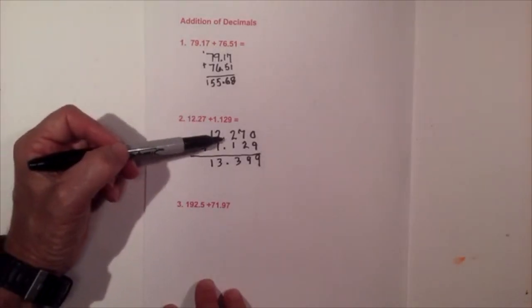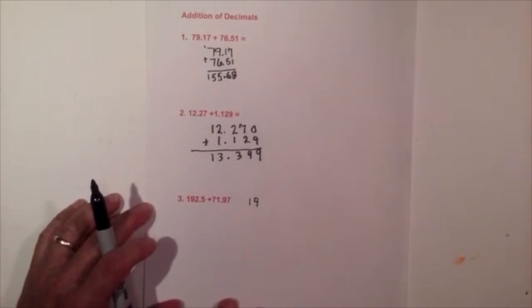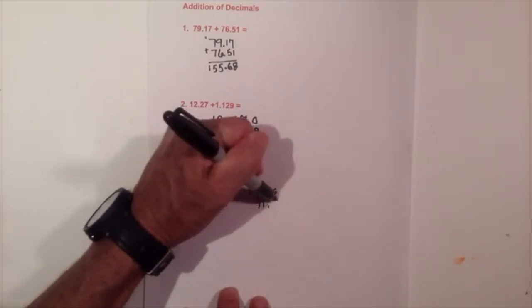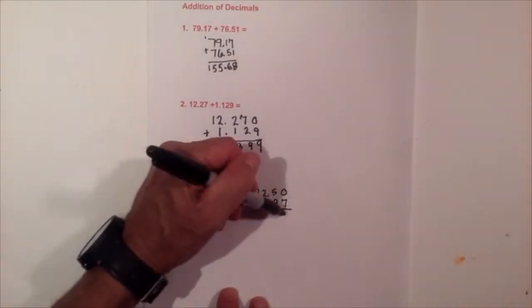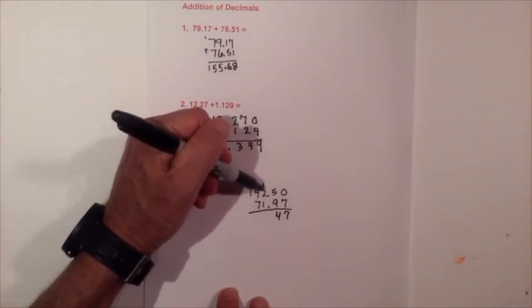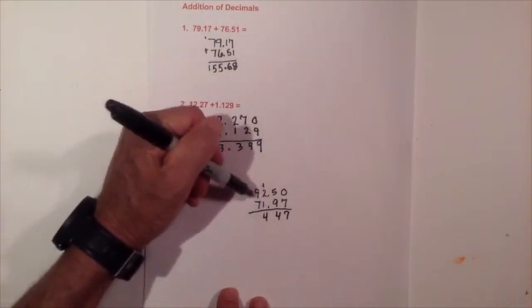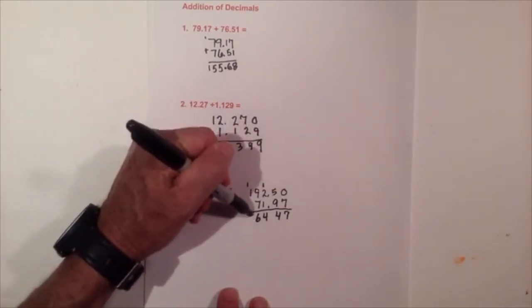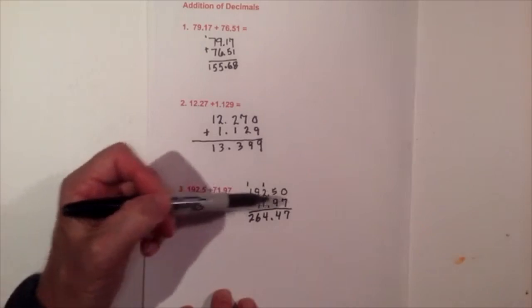The key was notice that I lined up the decimal and then I added a 0 there. Same thing again, we have 192.5 plus 71.97. If you would like, you can add a 0 on top. Notice that I have lined the decimals up and then we just add them normally. Bring over the 1, then this becomes 2, 3 and that is 4, and 9 plus 7 is 16, carry the 1 and then that is 264.47. Make sure you bring down the decimal. Again, the key on each of these is I line up the decimals.